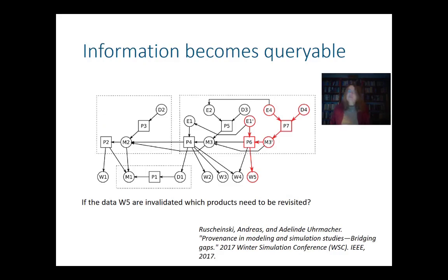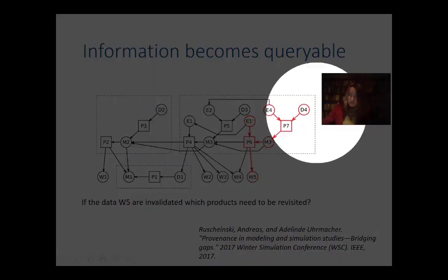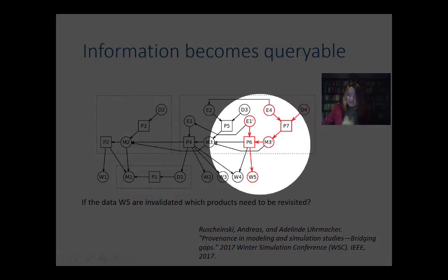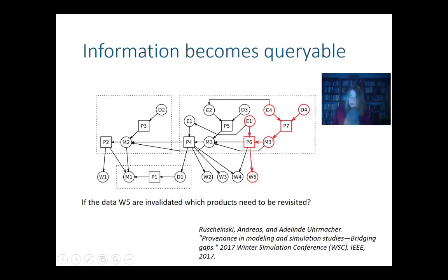If you have this kind of information, you can put it in a database — preferably a graph database — and then you can ask things like: if the data are invalidated, which products of my simulation study need to be revisited? So where could I assume that a dataset becoming invalid would also make certain products of my simulation study invalid? You see here certain data that were derived, certain models, the simulation experiments — all of those would have to be checked again.